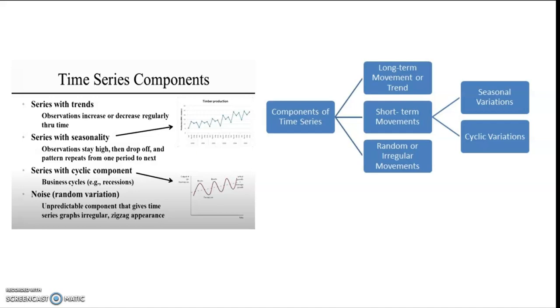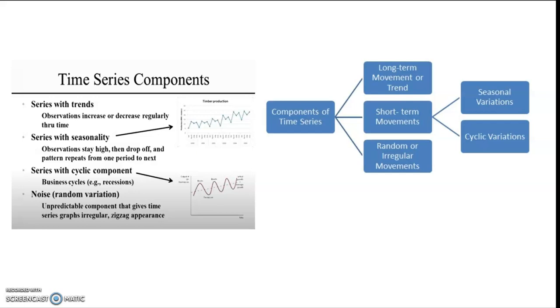Then we may have series with cyclical component. For example we may have business cycles like recession, recovery, we may have depression or we may have boom. And the last component of time series data is random or irregular variation and that is unpredictable component that gives time series graphs irregular and zigzag appearance.